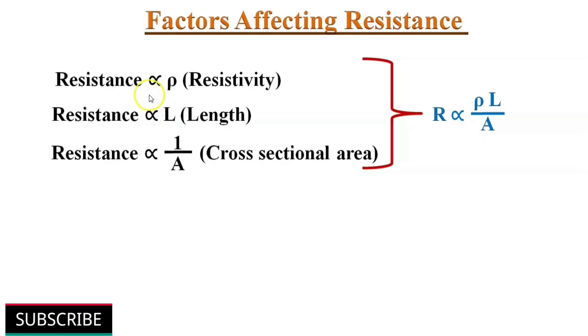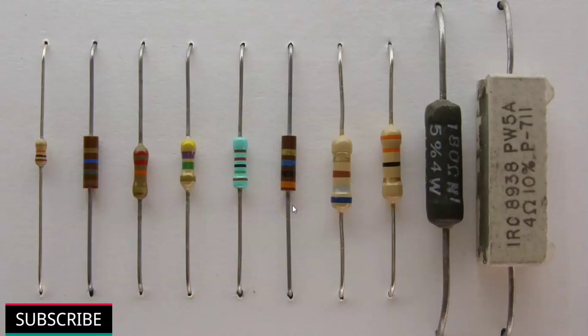Hence for any material, resistance is directly proportional to resistivity and length of that material, and resistance is inversely proportional to cross sectional area of a material. So we can say that R equals rho L by A. Commercially, there are different types of resistors available with different sizes and shapes.